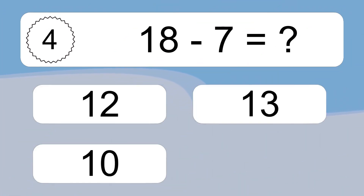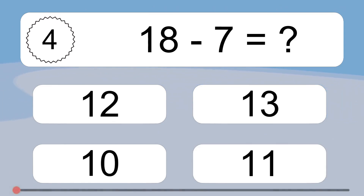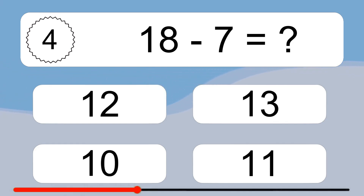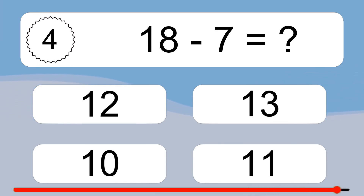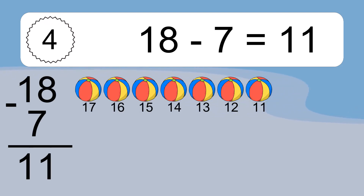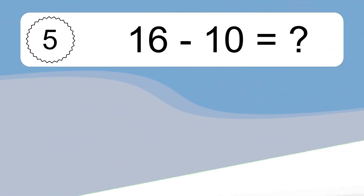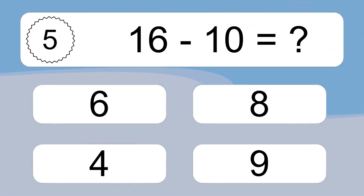18 minus 7 equals what? 18 minus 7 equals 11. Let's count it: 17, 16, 15, 14, 13, 12, 11.